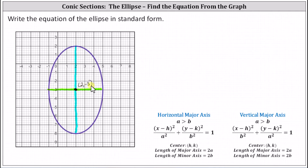Because the ellipse has a vertical major axis, we'll write the equation in the form: the square of x minus h divided by b squared, plus the square of y minus k divided by a squared, equals one, where a is greater than b. Here h comma k is the center, the length of the major axis is two a, and the length of the minor axis is two b. When we have a vertical major axis, the larger denominator is under the y part and the smaller denominator is under the x part. When we have a horizontal major axis, the larger denominator is under the x part and the smaller denominator is under the y part.